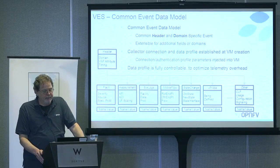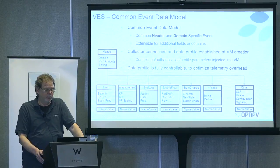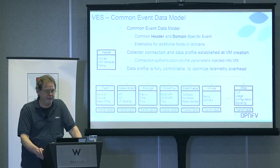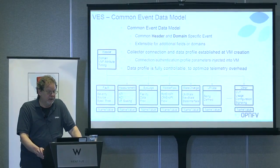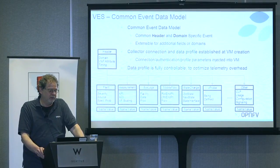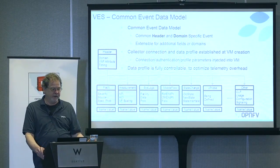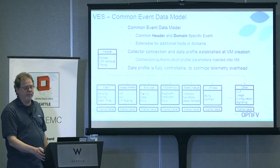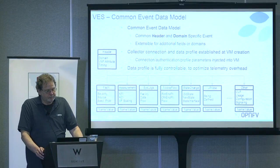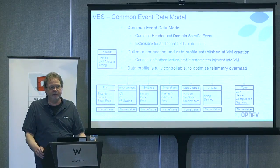Looking at the data model — the basic framework for how we're organizing this is pretty simple. There's a header that describes the context in which the data was collected. Right now we have focus on the VNF, but we're going to expand this to things such as the host. In that header you have common information about the source — for example, the VNF, the VM. Individual VMs may have multiple inside a VNF, so each VM is going to have a UUID as an identifier. The domain will indicate what type of event this is. It's going to be an extensible data model, so you can add any type of additional attributes or domains to the events.